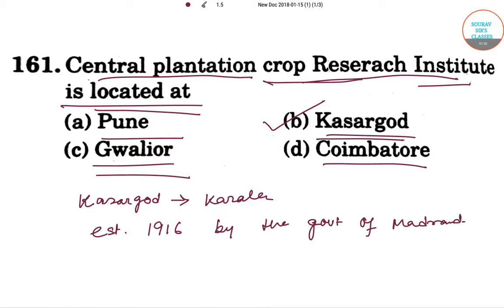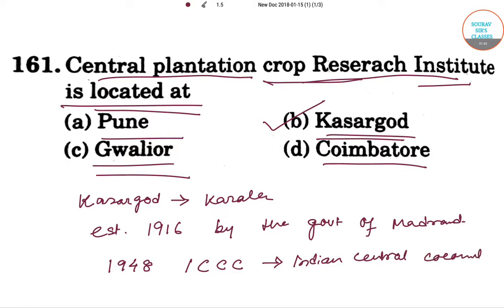In the year 1948, this institute was taken over by the Indian Central Coconut Committee, that is ICCC. So this was all about this question — option B, Kasargod, Kerala, is the answer. Let's see our next question.